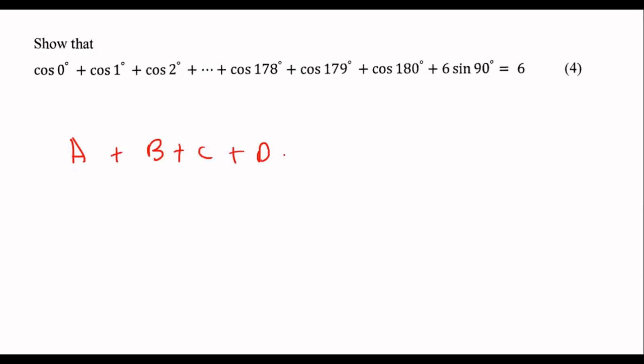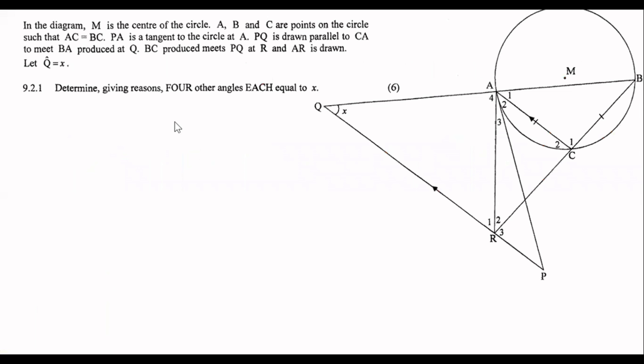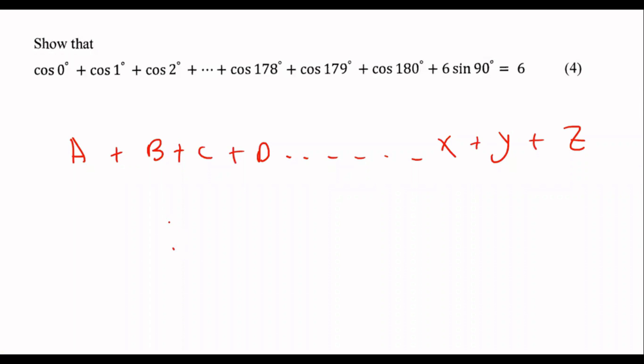A plus B plus C plus D plus X plus Y plus Z. Usually what happens is certain stuff in the middle cancels. So for example this cancels with this and this cancels with this.